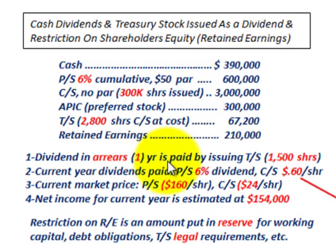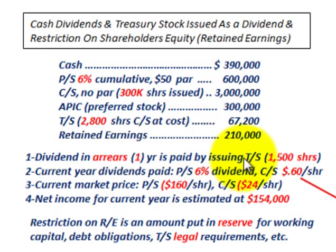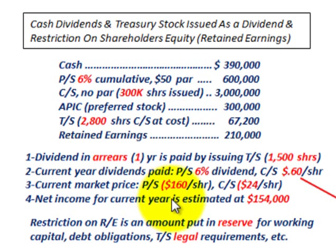We have dividends in arrears for one year, paid by issuing 1,500 shares of treasury stock to the preferred stockholders. Current year dividends on preferred stock are at the 6% dividend rate, and common stock dividends are $0.60 per share. The current market price for preferred stock is $160 per share, and common stock market price is $24 per share. Net income for the current year is estimated at $154,000.